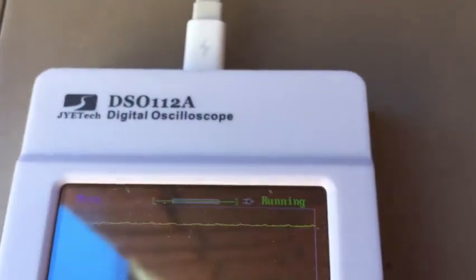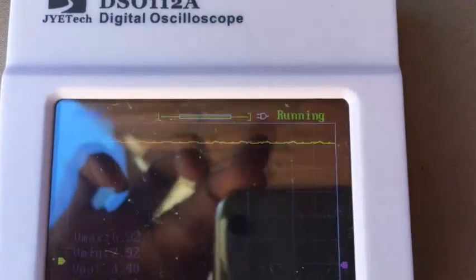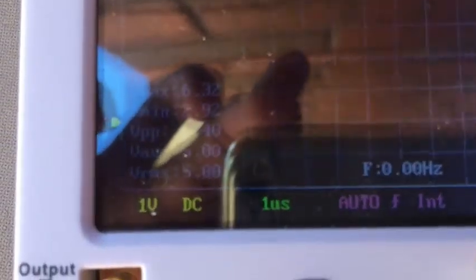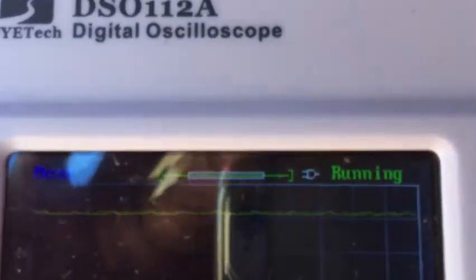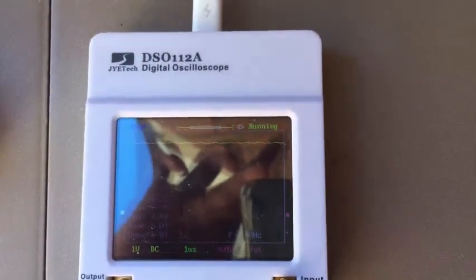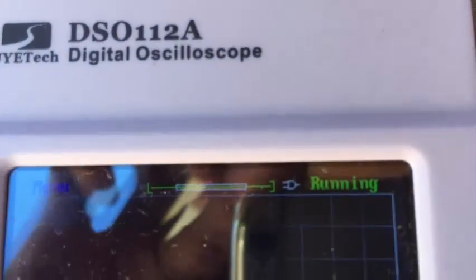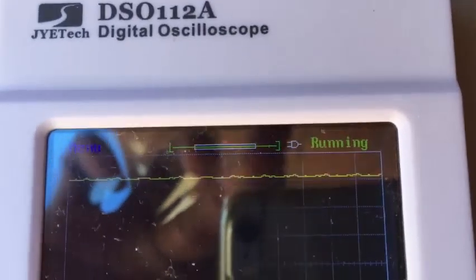When you go to the oscilloscope, it's around 5 volt. The division is 1 volt division. It's at 5 volt. The ripple is only a little bit.